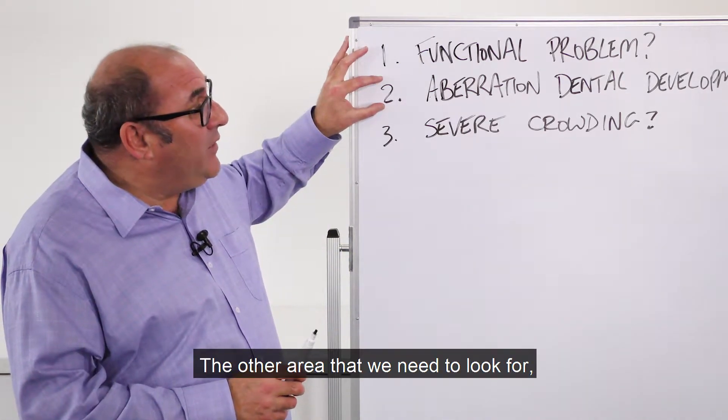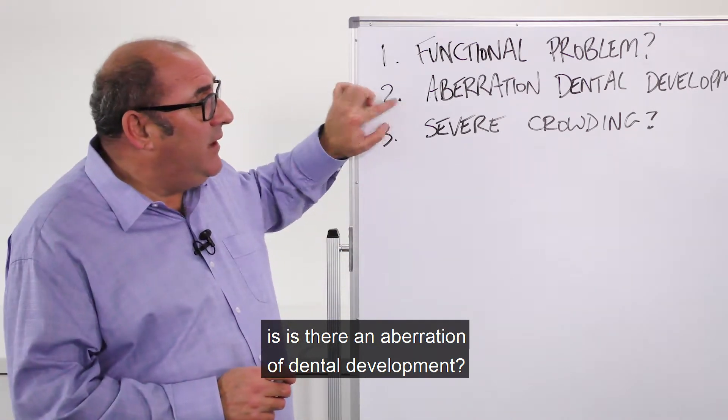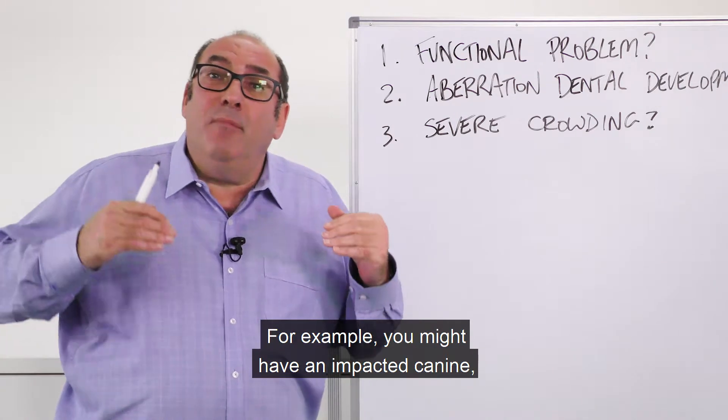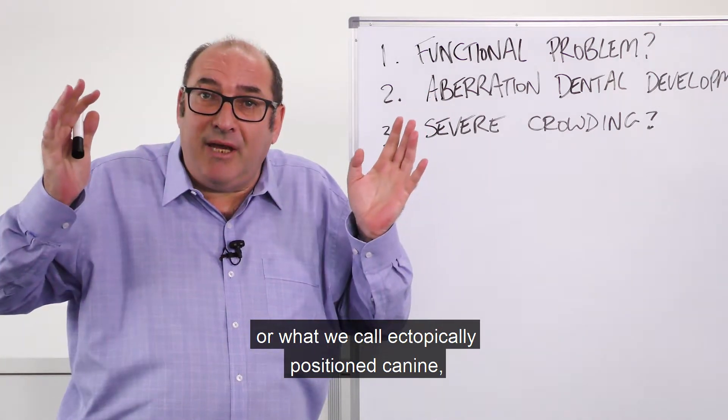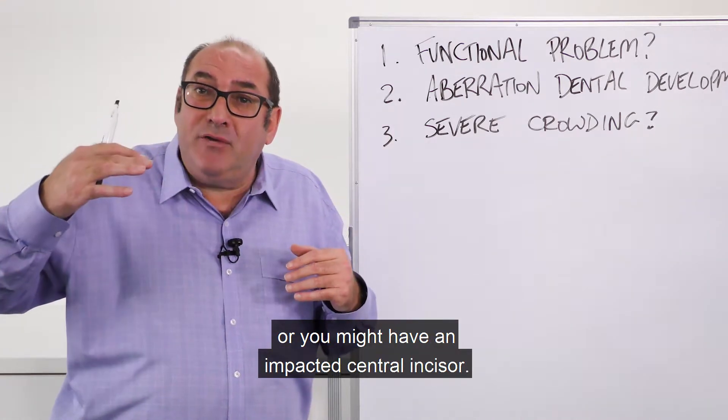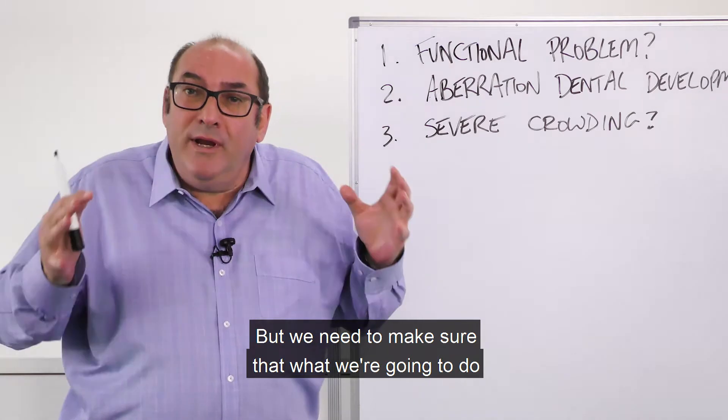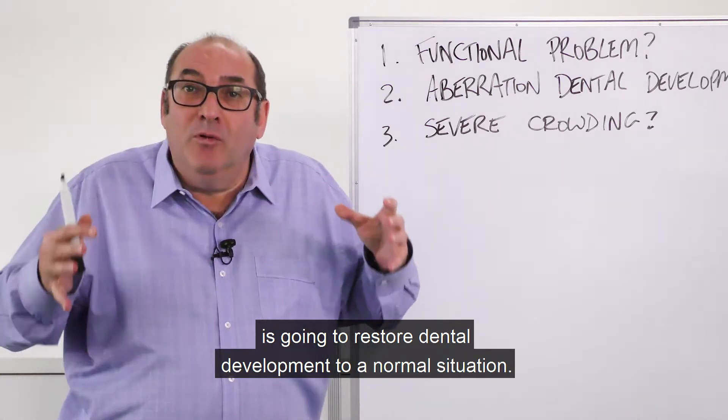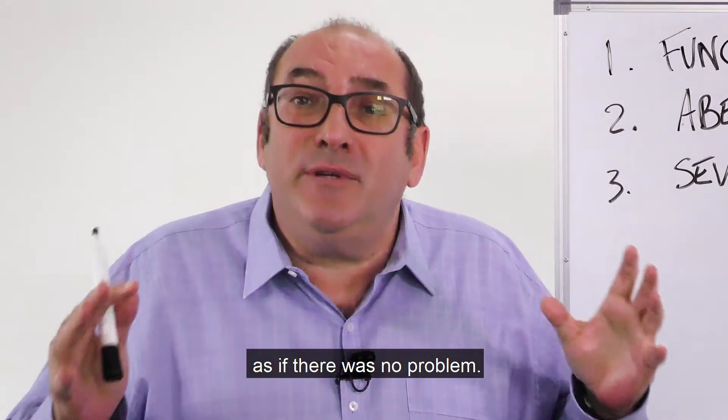The other area that we need to look for is, is there an aberration of dental development? Are the teeth all coming down properly? For example, you might have an impacted canine, or what we call an ectopically positioned canine, or you might have an impacted central incisor. But we need to make sure that what we're going to do is going to restore dental development to a normal situation. So we want the teeth to be able to come down as if there was no problem.